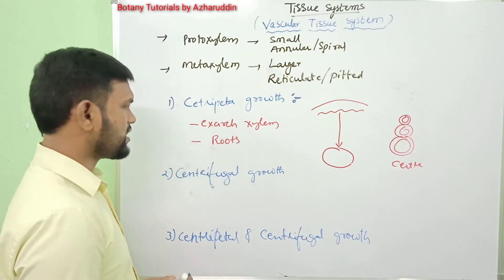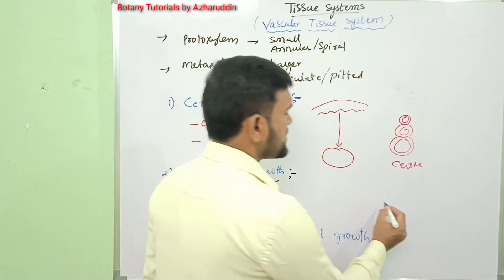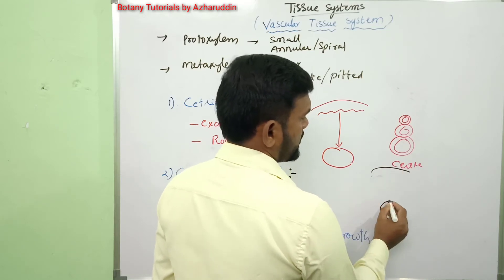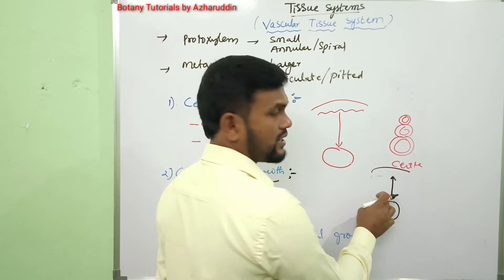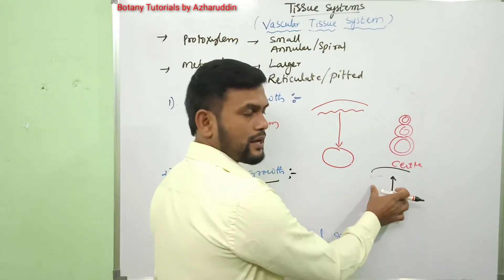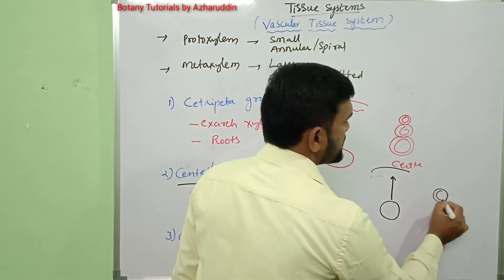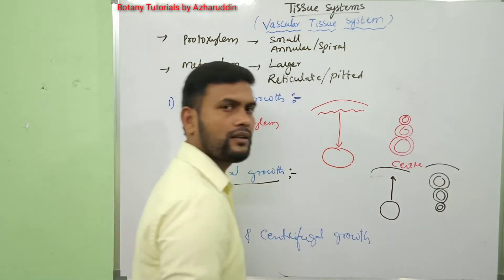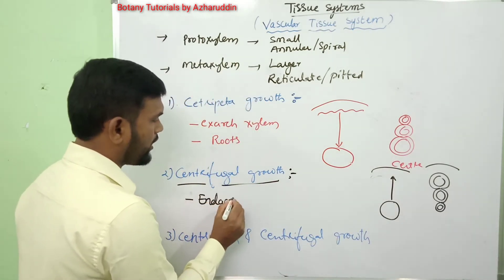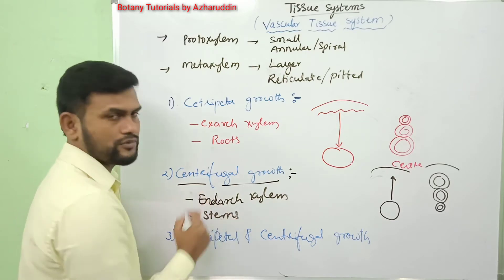In centrifugal growth, differentiation begins at the center and extends up to the periphery. This type of xylem has proto xylem elements towards the center and meta xylem elements directed towards the periphery. Such xylem is called endarch xylem, which is found in stems.